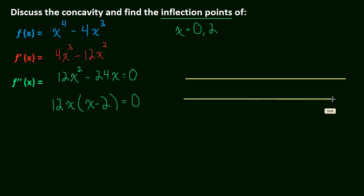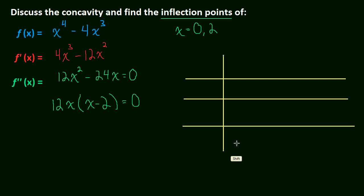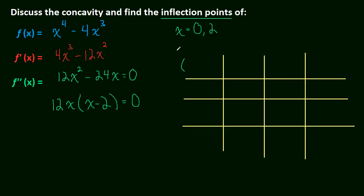Let's test where the first derivative is increasing and decreasing. We're going to do that by setting up a table — we'll call this setup the second derivative test. Memorizing that label isn't very useful; you should understand what we've been talking about, and then you won't really have to memorize it — you'll just know that you should do this.